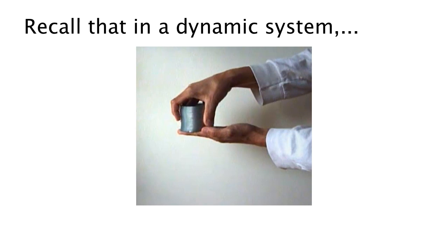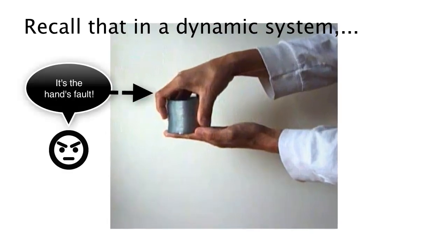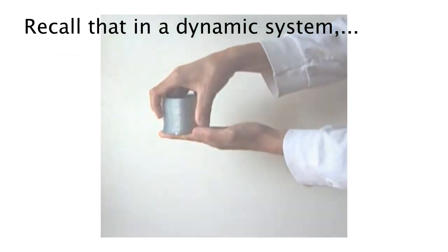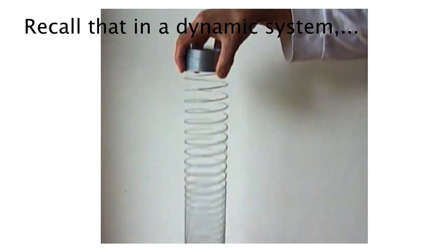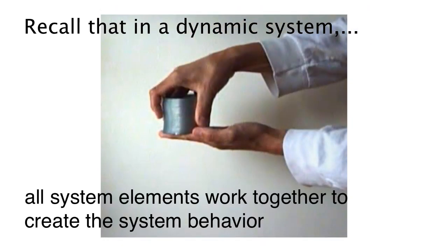Recall that in a dynamic system, the behavior of the system is a result of each of the individual components interacting together — you can't separate one from the other. It's really tempting to blame one part of the system for the behavior of the system, but in truth, without each of the elements of the system, the behavior of the system would not arise. So from a systems point of view, the cause of the system's behavior is the collective interaction of each of the elements.